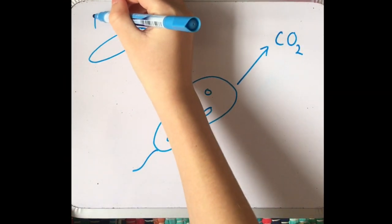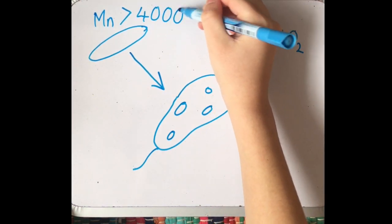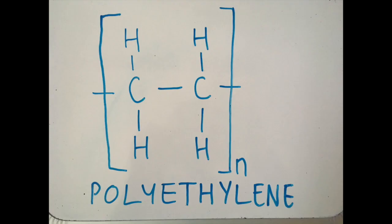However, if the molar mass is greater than 4000, the organism will not be able to assimilate the polymer and will not be able to break it down. In non-biodegradable polymers, the polymer backbone is unreactive and the bonds strong, therefore it is difficult to break down into shorter chains.